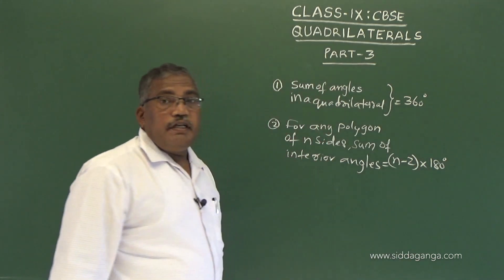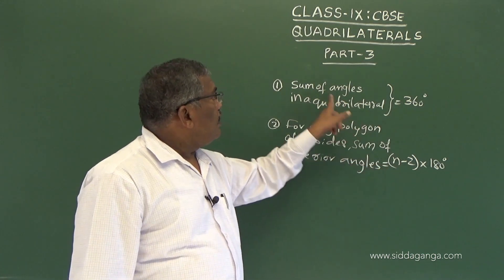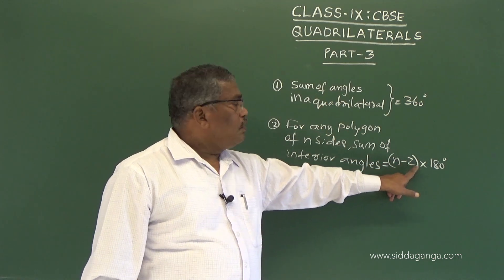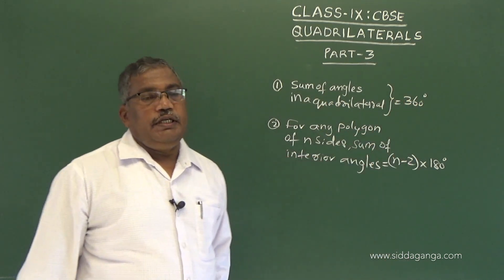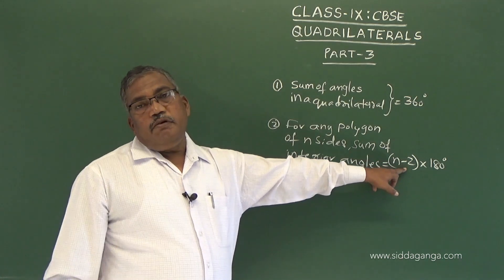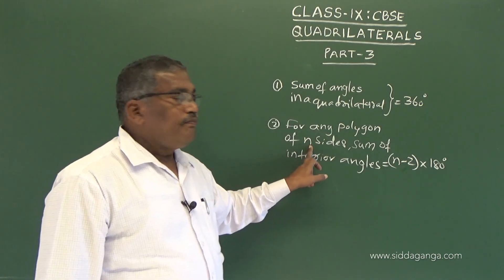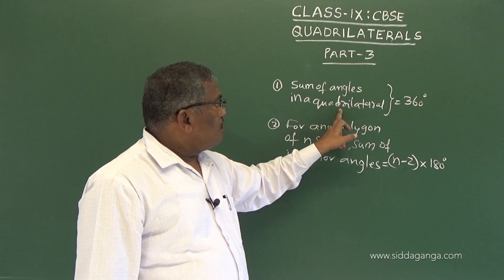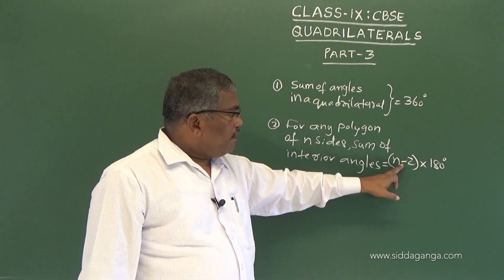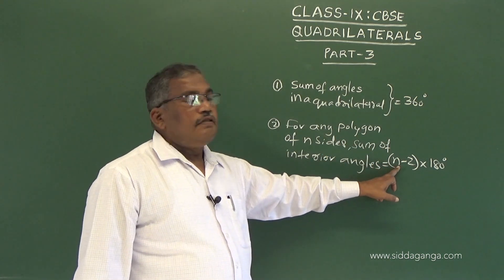This is why when we take n equal to 4 for a quadrilateral, it becomes 4 minus 2, which is 2, and 2 into 180 is 360 degrees. Using this formula we can find the sum of interior angles of any polygon — triangle, quadrilateral, pentagon, hexagon, or any number of sides.